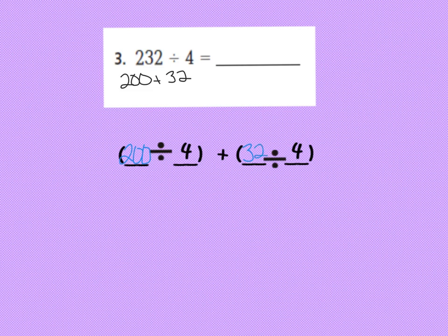So now we can take our 200 and divide it by 4 plus our 32 and divide that by 4. Well, I know that 20 divided by 4 is 5, and my extra 0 on the end in the ones place plus 32 divided by 4 is 8. These are my partial quotients, 50 and an 8. Well, 50 plus 8 gives me 58. So that should be my quotient. But I need to check it first.